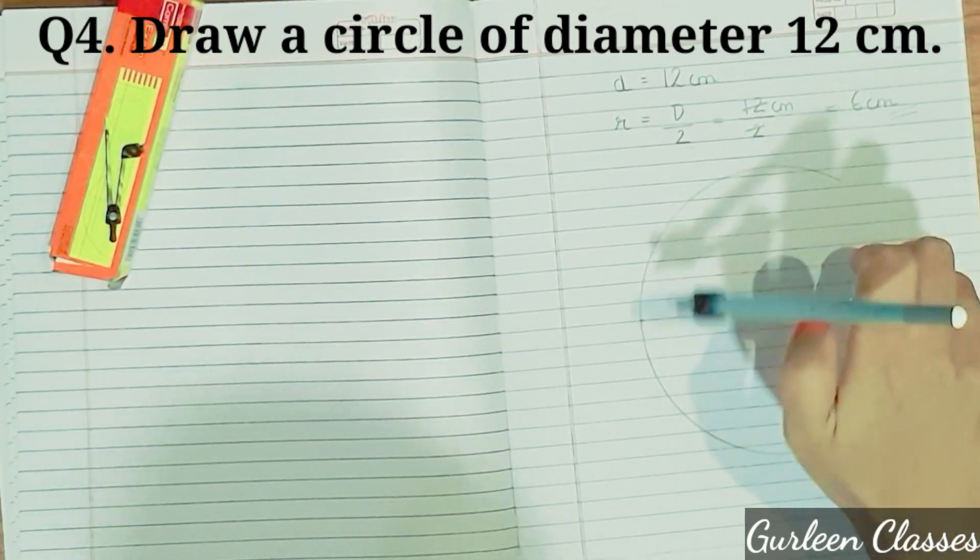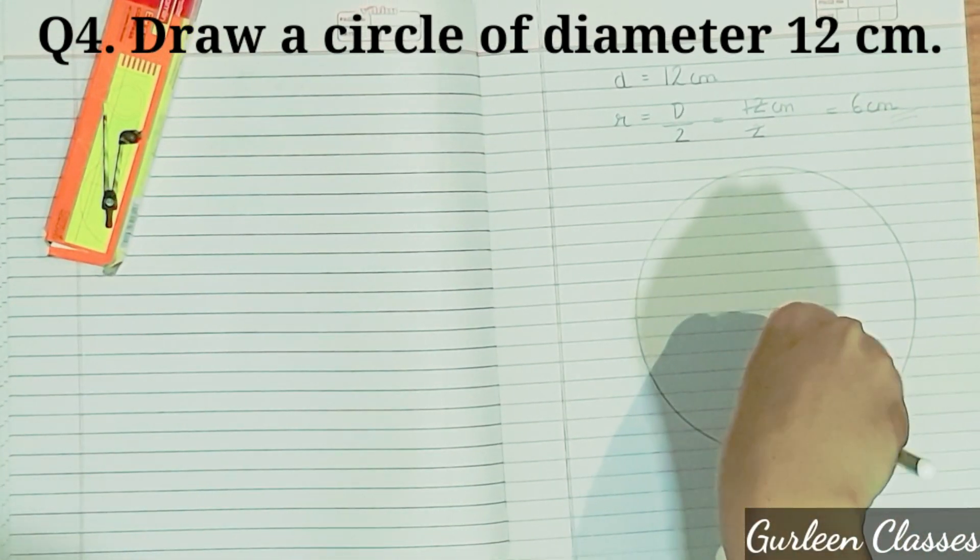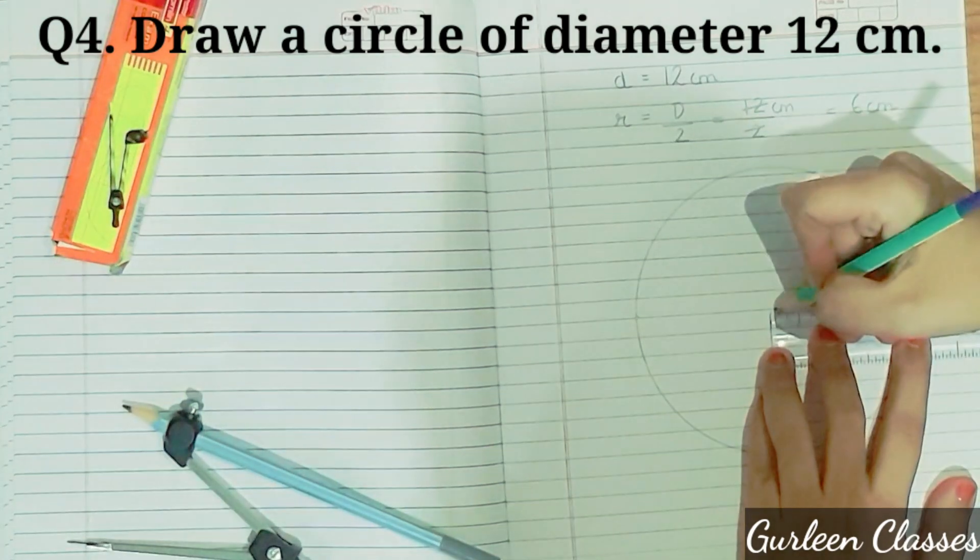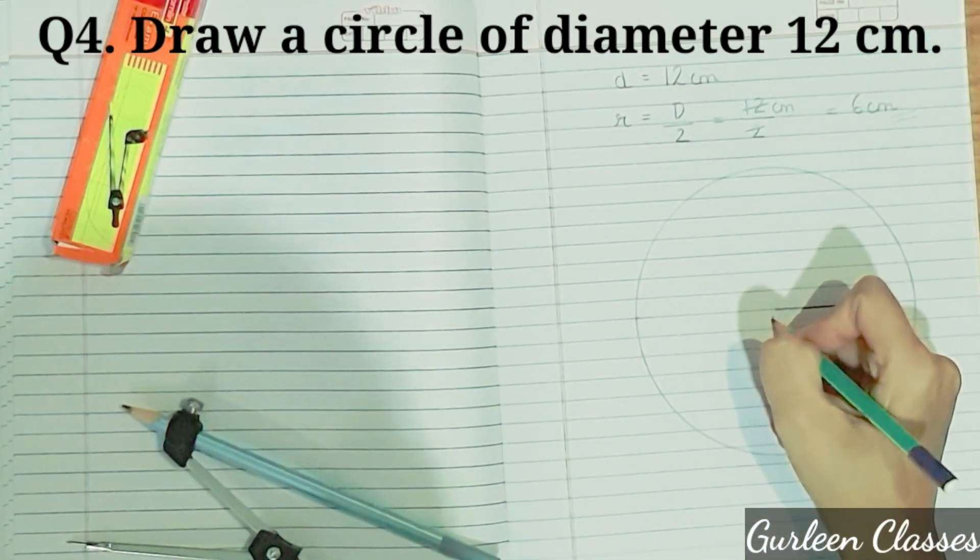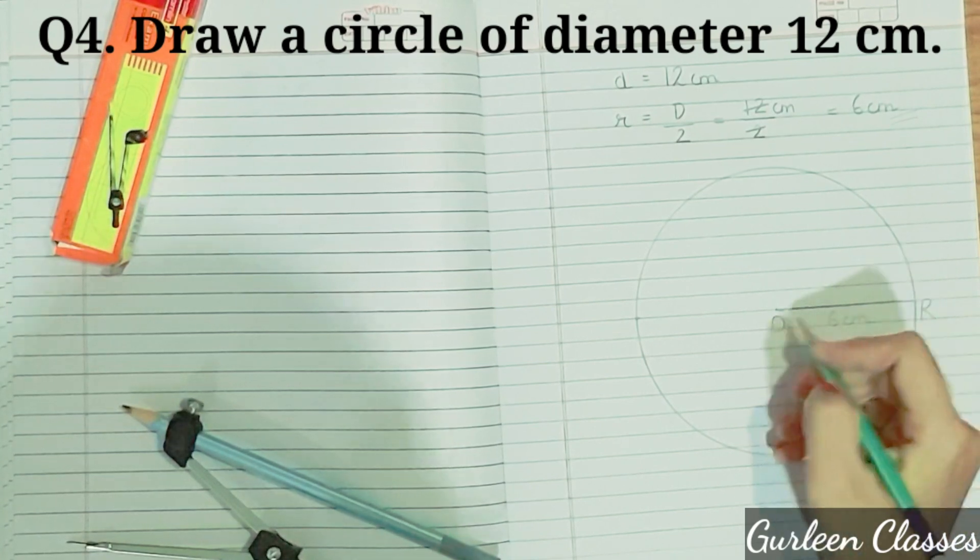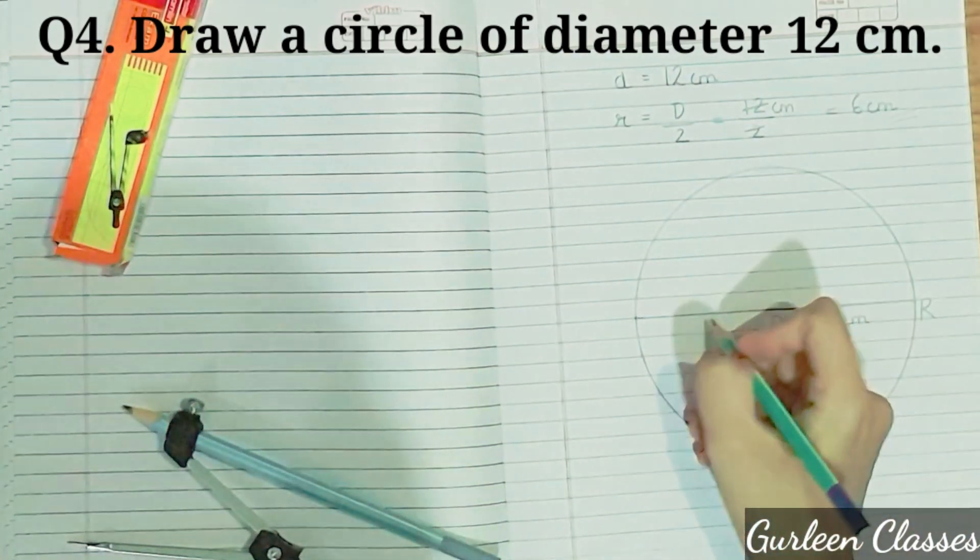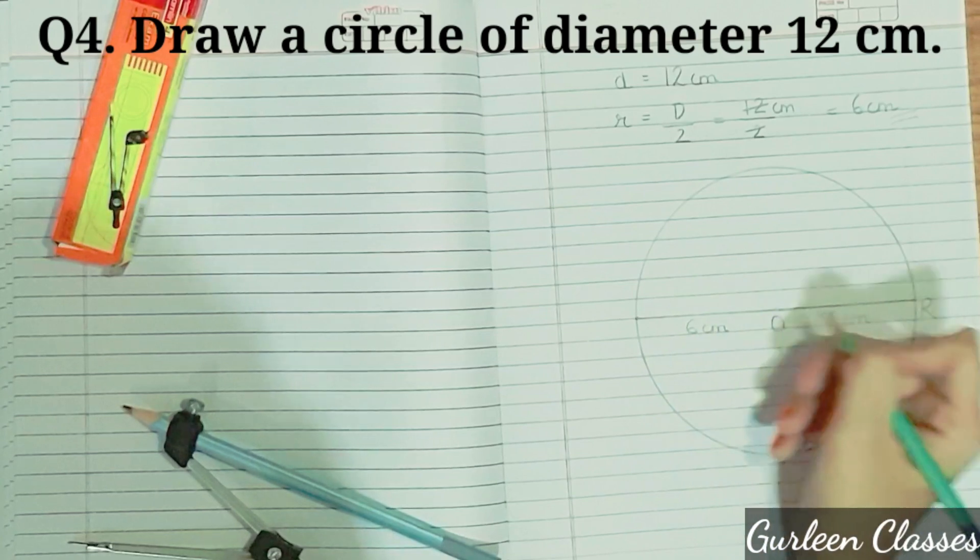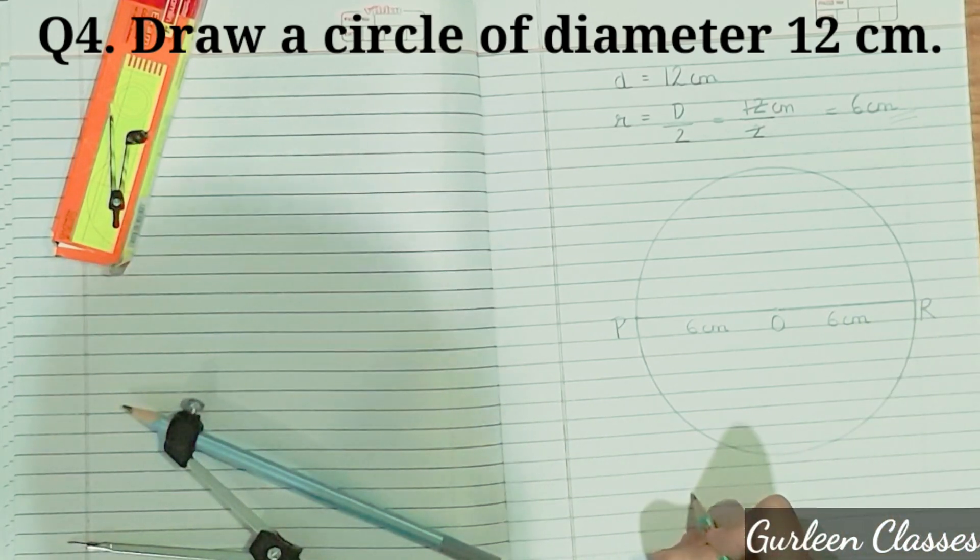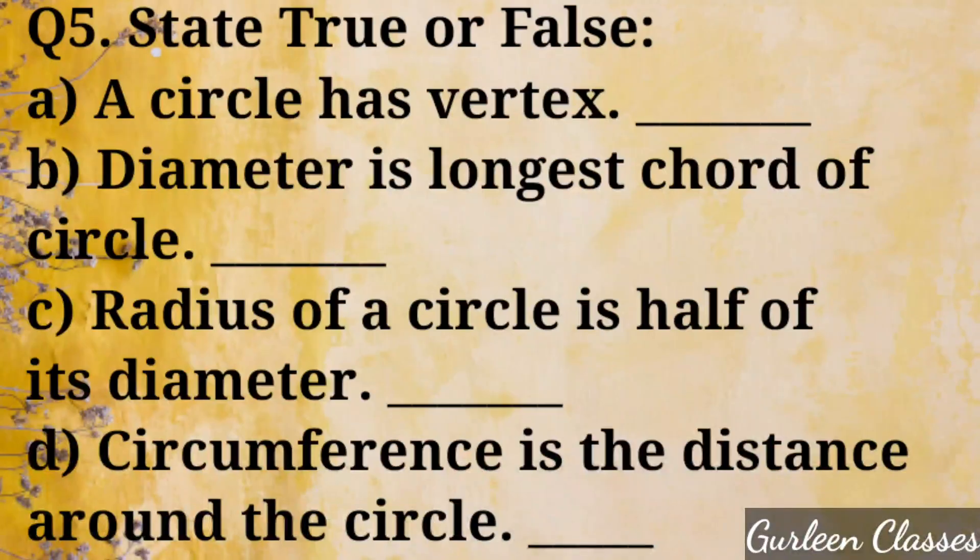So here we are drawing a circle of radius 6 cm. Students, sometimes it happens that your hand moves here and there. It is okay, don't worry. But your two arms should not meet. Now take a scale. From center, draw a line till circle. Write here O. And write here R. So O-R is the radius of 6 cm. Now join from O to left side. As we know diameter is double. So it is also 6 cm. And write here P. So P-O-R is the required diameter that is 12 cm. P-R is the diameter that is 12 cm.